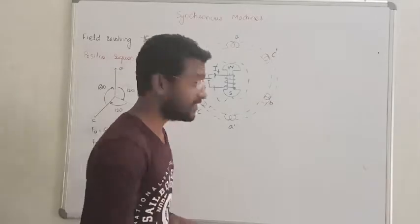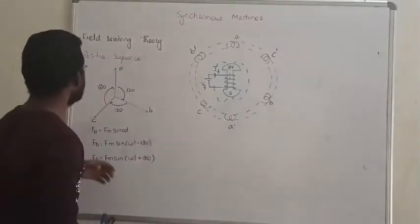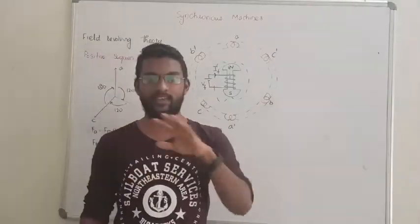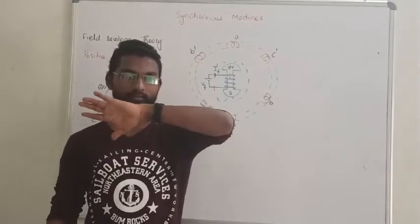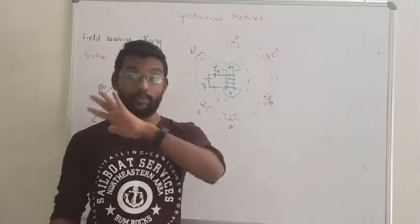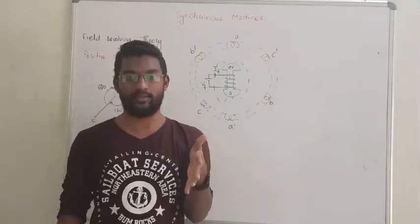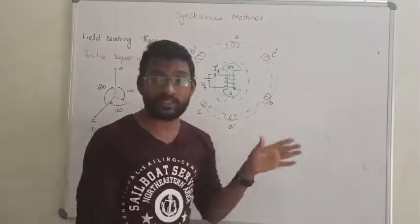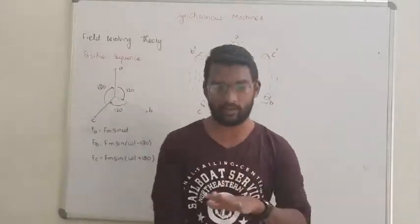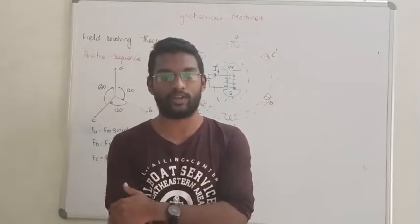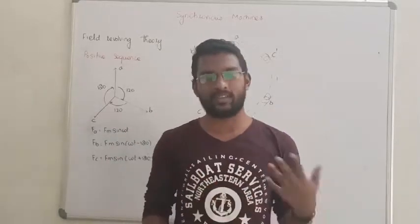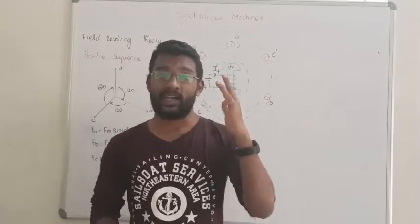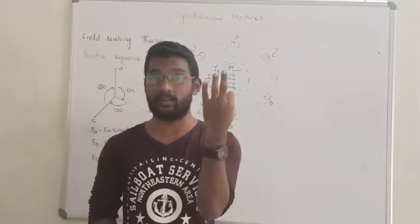Hello guys, so in this lecture we are going to discuss about the field revolving theory. If you have a machine, the rotating magnetic field will rotate. We will find the direction from the power system lectures. In the system, there are three types: positive sequence, negative sequence, and zero sequence.